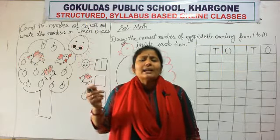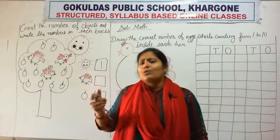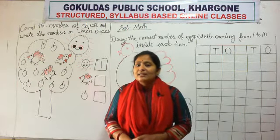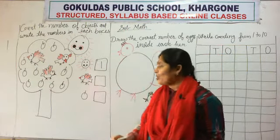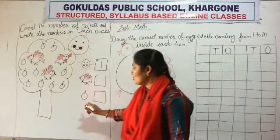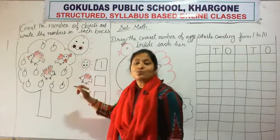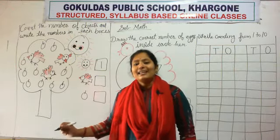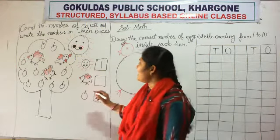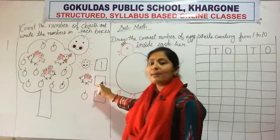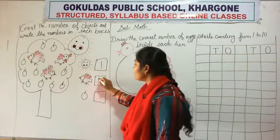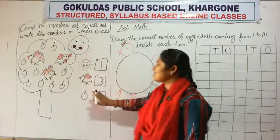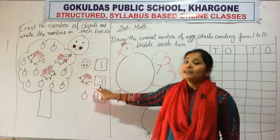Now tell me — how to write number three? Two half cups make number three. Very good. So we write here number three, like this. This is number three.